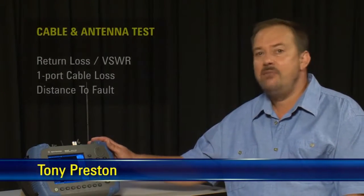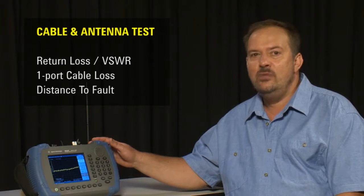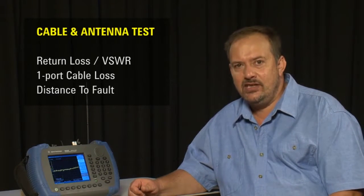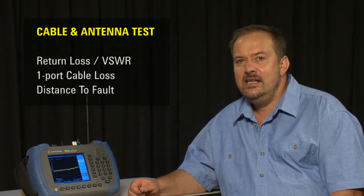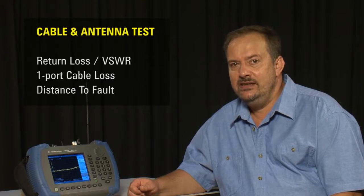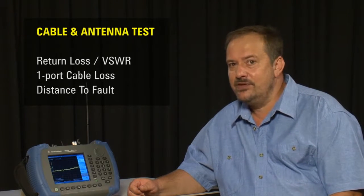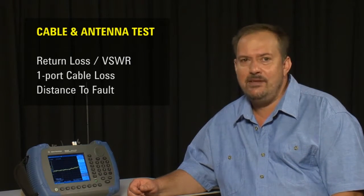If you have the Tracking Generator option installed on your HSA, then by adding the CAT option, you'll be able to measure antenna return loss and VSWR, single port cable attenuation, and Distance to Fault on cables, looking for cable breaks or damaged cables.